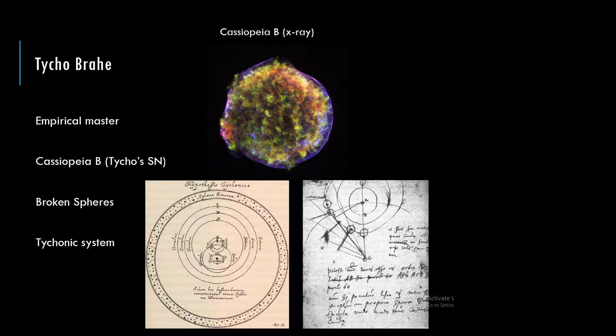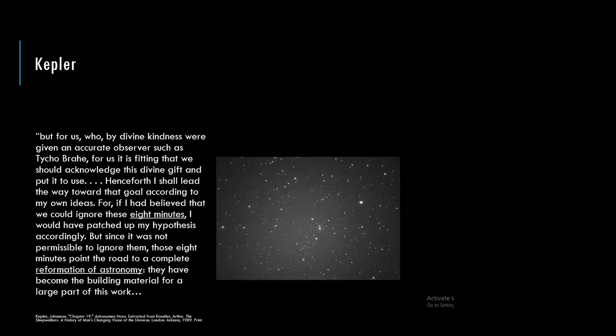Brahe had a protege named Johannes Kepler, who wrote: 'For us, who by divine kindness were given an accurate observer such as Tycho Brahe, for us it is fitting that we should acknowledge this divine gift and put it to use. Henceforth I shall lead the way towards that goal according to my own ideas. For if I had believed that we could ignore these eight minutes, I would have patched up my hypothesis accordingly. But since it was not permissible to ignore them, those eight minutes point the road to a complete reformation of astronomy. They have become the building material for a large part of this work.'